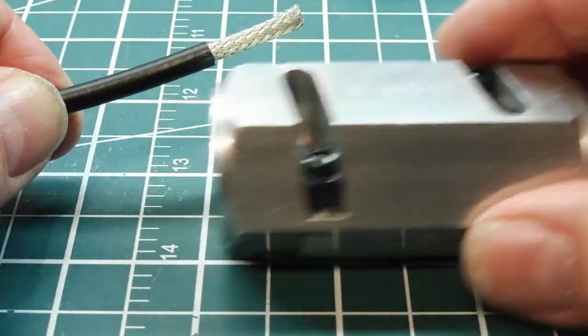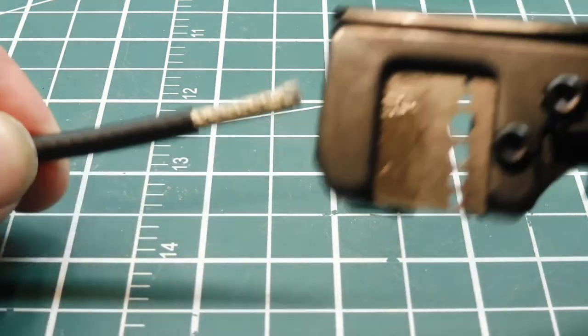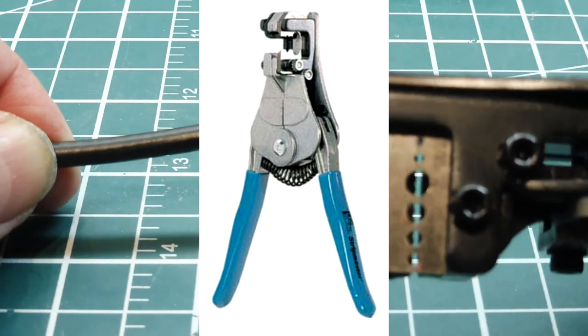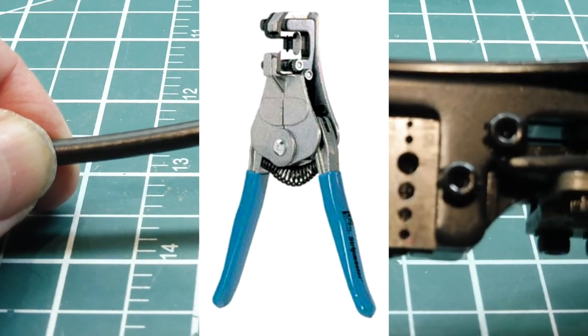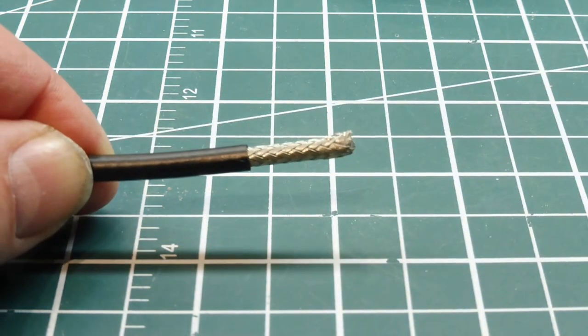Now you can get these in different sizes. Here's one for LMR 400. There's also another tool similar to the one handed stripper, like this one here, but it only has two sizes: one for the outer sheath and another size for the center conductor. It's very fast and works very well for coax cable.